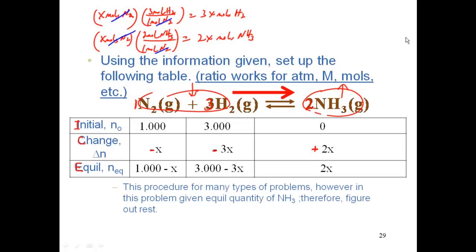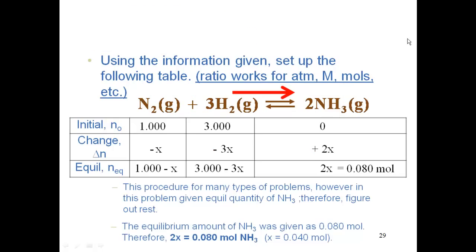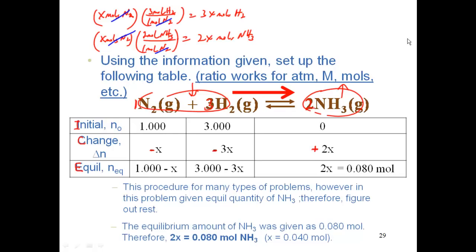Answer is yes. Remember they said we had 0.080 moles of ammonia at equilibrium. So in essence that's telling me my equilibrium amount, which means then that 2x is equal to that 0.080 moles.